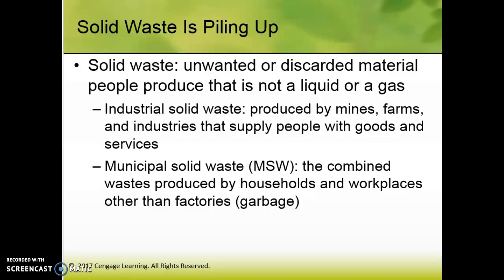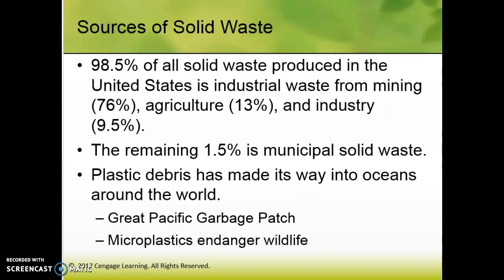Solid waste is anything solid that we don't want — not a liquid or a gas. Industrial solid waste includes mines, farm waste, and industrial waste. Municipal solid waste is basically all trash — combined waste produced by households and workplaces other than factories. 98% of all solid waste produced in the U.S. is industrial waste: 76% from mining, 13% from agriculture, and 9.5% from industry. If we improve our mining practices and shift to renewable resources, that's a great opportunity to reduce overall solid waste. The remaining 1.5% is municipal solid waste.